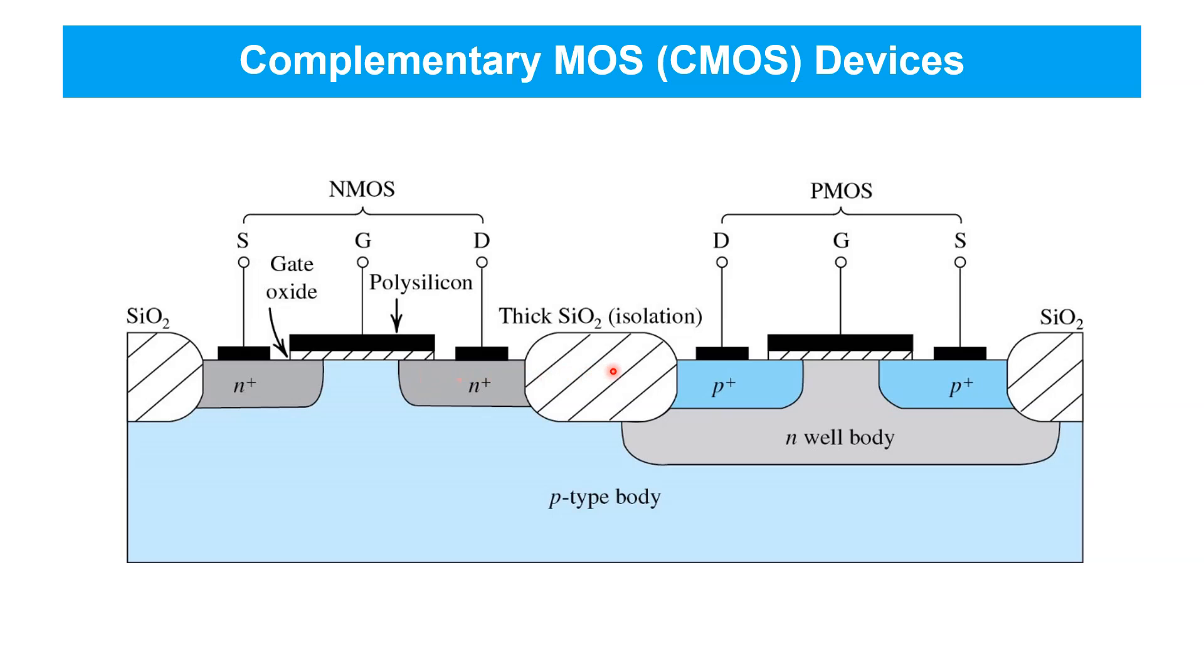Meanwhile, separate, larger N-wells are created elsewhere in the P-type substrate, into which further dopements are introduced to introduce even more heavily doped P-type source and drain regions for PMOS devices.